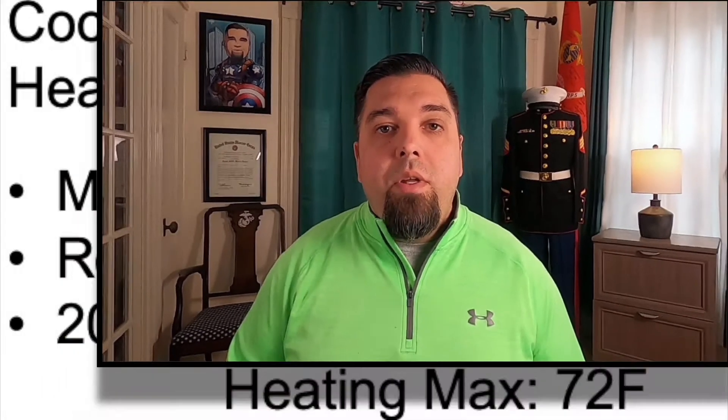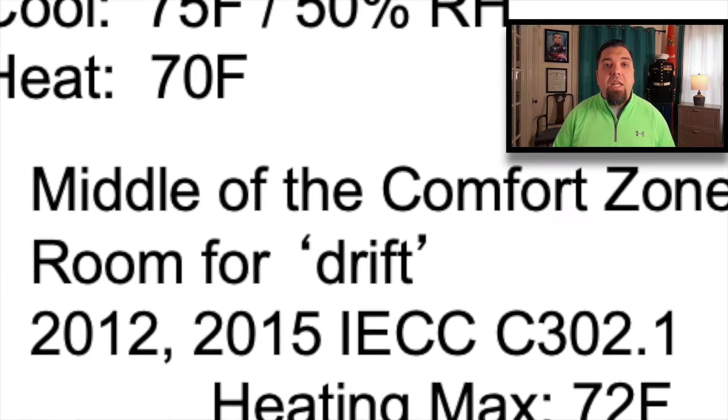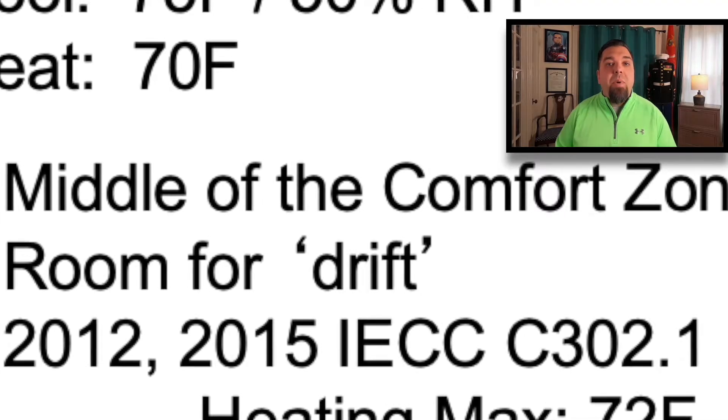Notice the years? This is not new information — it's just starting to be enforced. And let's be honest, as soon as something is enforced, that's when our contractors start to embrace it. In section 302.1 of the IECC, the International Energy Conservation Code, they define the interior design conditions. It states that if you're doing a load calculation, the maximum design temperature in heating is 72°F — it should be 70 plus or minus 2 degrees.